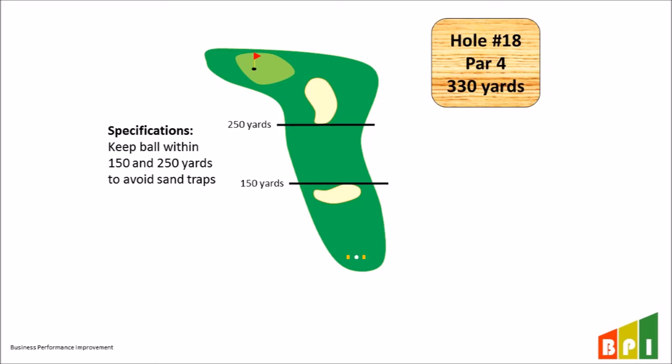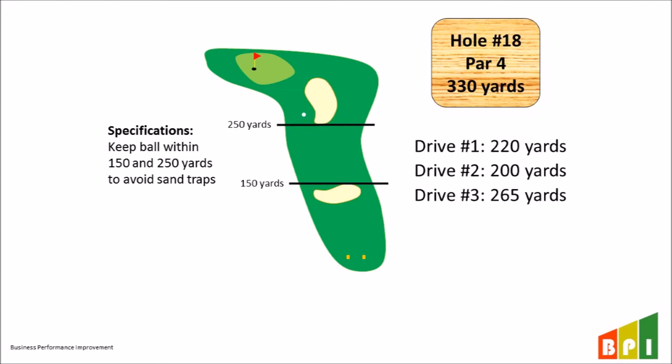On my first drive, I got 220 yards — I exceeded 150 yards but didn't get too close to the 250 yard limit. The second drive was 200 yards, right in the middle of the range. The third drive was a little too far, out to 265 yards. Although it didn't go into the sand trap, it almost did, so I greatly increased my chance of a penalty. The goal of Six Sigma is to reduce the risk of running into a problem, which in this example occurs when you go above 250 yards or below 150 yards.